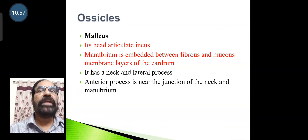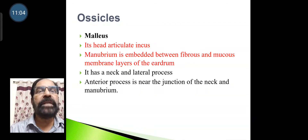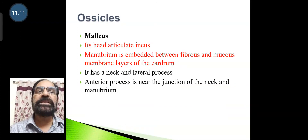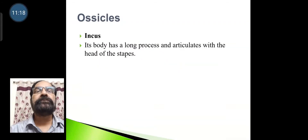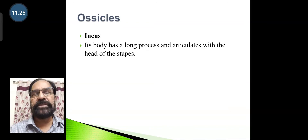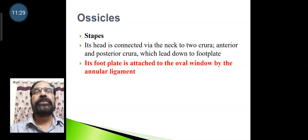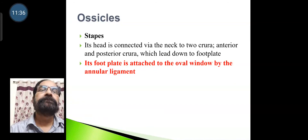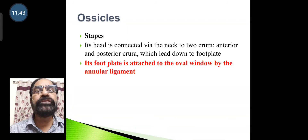The ossicles: The malleus head articulates with the incus; its manubrium is embedded between the fibrous and mucous membranes of the eardrum, and it has a neck, lateral process, and anterior process near the junction of neck and manubrium. The incus body has a long process that articulates with the head of the stapes. The stapes head is connected via two crura (anterior and posterior) to the footplate, which is attached to the oval window by the annular ligament.